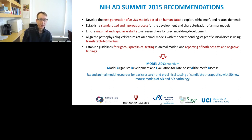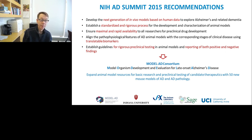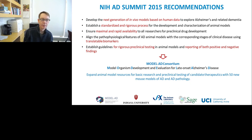That leads us to the next generation of in vivo models — I'll be talking about our mouse models. We also need to establish standardized and rigorous processes for developing and characterizing these models. This is where gene expression assays really come in handy — they allow us to standardize our analysis across all strains. We're also ensuring maximal and rapid availability to all researchers for preclinical drug development. That will require aligning the pathophysiology of these animal models to correspond to translatable, clinically relevant biomarkers, and establishing rigorous preclinical testing guidelines, reporting both positive and negative findings.